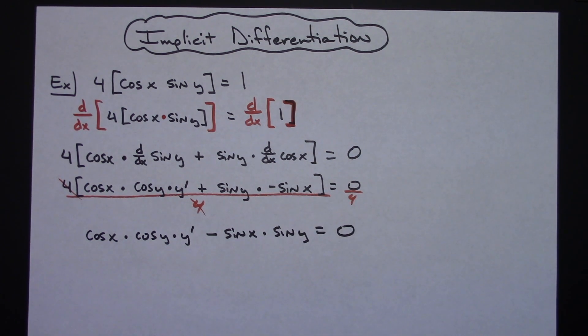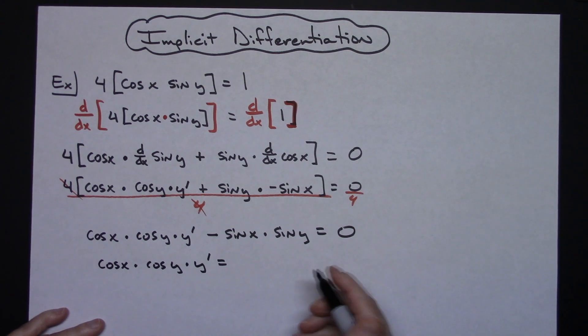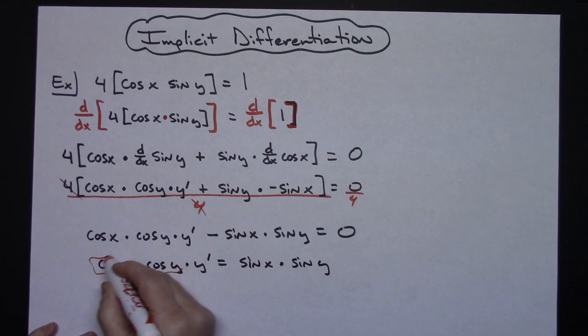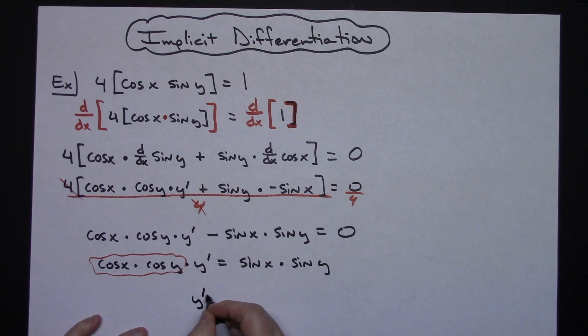Now I need to solve for y prime. The only y prime in the problem is right here so this term is going to stay on the left hand side, this one needs to go to the right. It is a minus so I need to add it to both sides. So I'm going to have cosine x times cosine y times that y prime is equal to, move it over add it it'll become positive, so I'm going to have sine x times sine y. I need to solve for y prime so that means all of this I can divide both sides of the equation by that and I will have solved for y prime.